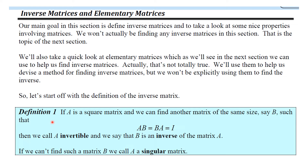Let's start with the definition of the inverse matrix. Definition 1: if A is a square matrix and we can find another matrix of the same size B such that A times B equals B times A equals I, then we call A invertible and we say that B is an inverse of A. If we can't find such a matrix B, we call A a singular matrix or a non-invertible matrix.